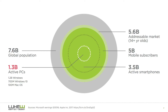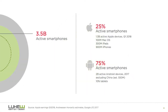Overall, we have 7.6 billion people and 1.3 billion active PCs. 5.6 billion is the addressable market — people we can actually reach with our products. We have 5 billion mobile subscribers and 3.5 billion active smartphones. Of those smartphones, 25% are Apple and 75% are Android.